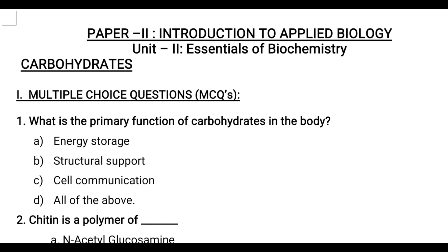There are 5 types of question categories: first category — MCQ type; second category — fill in the blanks; third category — very short answer type; fourth category — matching type; and fifth category — true or false. Let's go through the categories one by one, dealing with bits on carbohydrates.